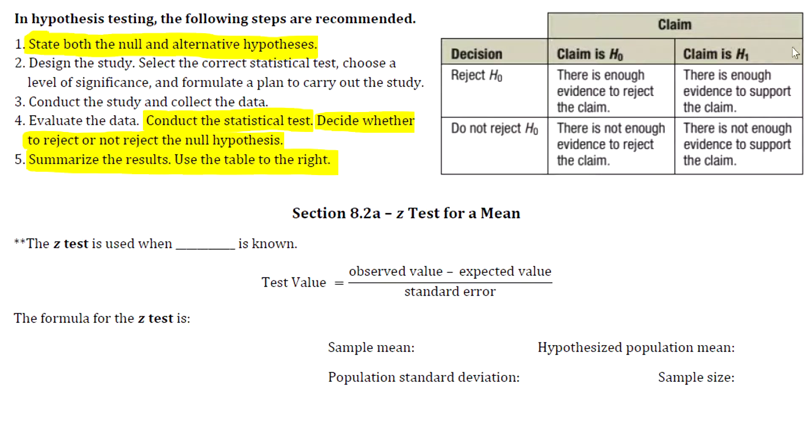So if the claim is in the alternative, then you say there is enough evidence to support the claim. If the claim is in the alternative and you do not reject the null hypothesis, then you say there is not enough evidence to support the claim.